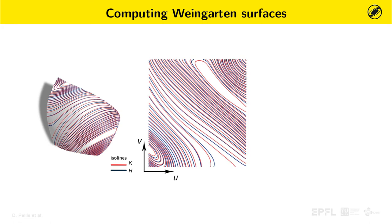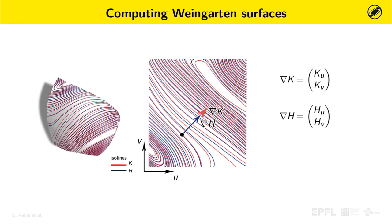Let us now take a surface parameterization UV. If these isolines run parallel on the surface, also their pre-images in the parameter plane shall be parallel. At each UV point, the gradient of the Gaussian curvature K, given by the derivatives with respect to U and V, is orthogonal to the K isoline. The same is true for the gradient of the mean curvature H. Therefore, if the two isolines are parallel, also these two gradients will be parallel at each point. We can then define Weingarten surfaces as surfaces where the determinant of the gradients of Gaussian and mean curvature vanishes at each point. Note that with this constraint, we do not specify any curvature relation.